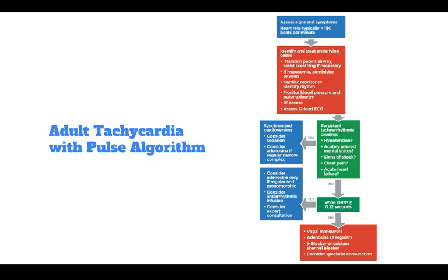This is the adult tachycardia with pulse algorithm. First, assess the signs and symptoms — the heart rate is typically greater than 150 beats per minute. Identify and treat underlying causes: maintain a patent airway and assist breathing if necessary. If hypoxemic, administer oxygen. Use a cardiac monitor to identify the rhythm. Monitor blood pressure and pulse oximetry. Gain IV access and assess the 12-lead ECG.